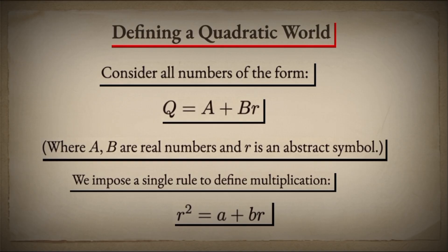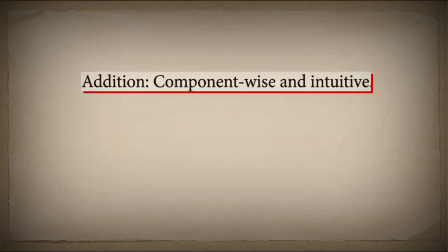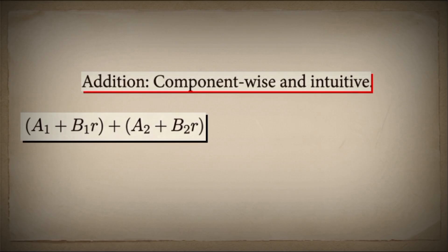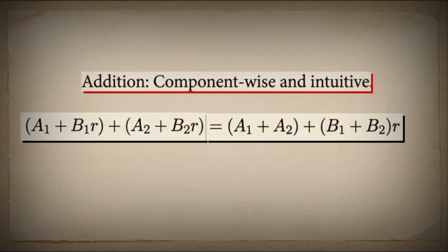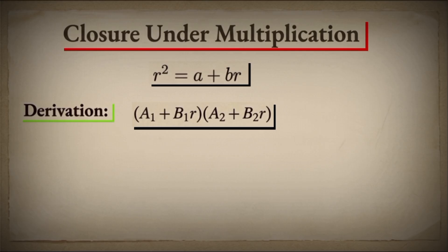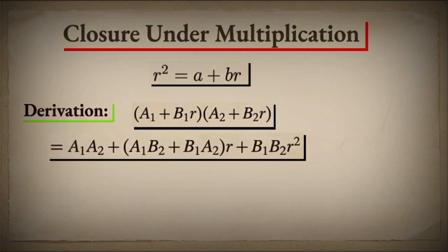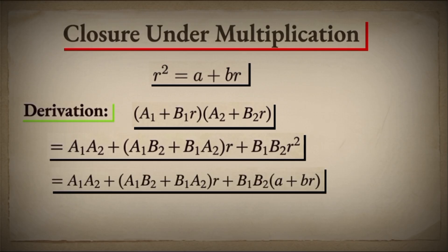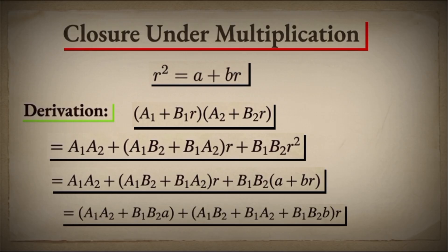We declare that R squared equals A plus B times R. This is the foundation of our new world. Now that we've created this system, we need to understand how it behaves — we need its algebra. Addition is straightforward, component-wise and intuitive: when we add A1 plus B1R to A2 plus B2R, we simply add the components: A1 plus A2, plus B1 plus B2 times R. But multiplication requires our new rule. When we multiply A1 plus B1R times A2 plus B2R, we expand normally, but wherever we see R squared, we replace it with A plus BR. After applying this rule and collecting terms, we get A1A2 plus B1B2A, plus the quantity A1B2 plus B1A2 plus B1B2B times R.